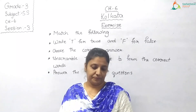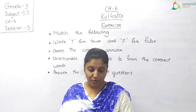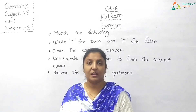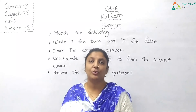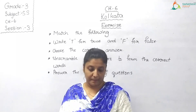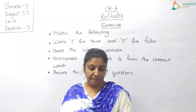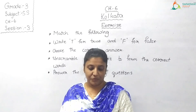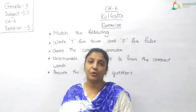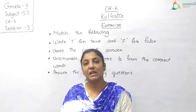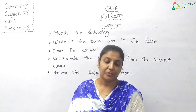Let us start. Column A, option A: Kolkata — you will match it with Column B, option number 3: Capital of West Bengal. So match A with 3. Next, Column A, option B: Bengali — match it with Column B, option number 4: Main language spoken in Kolkata. So match B with 4.